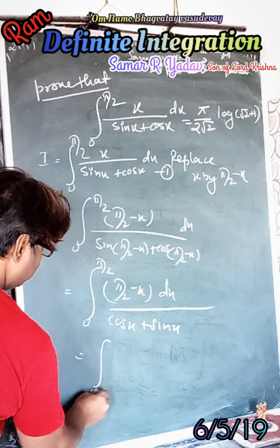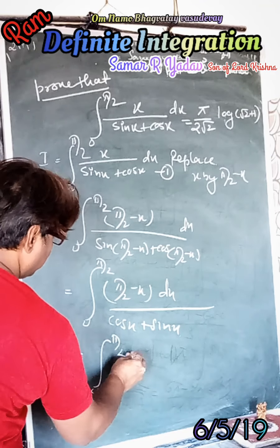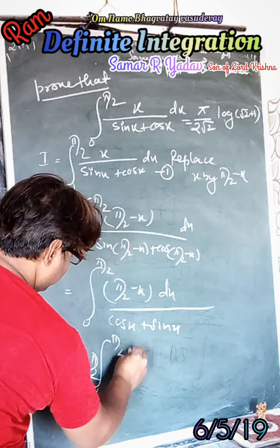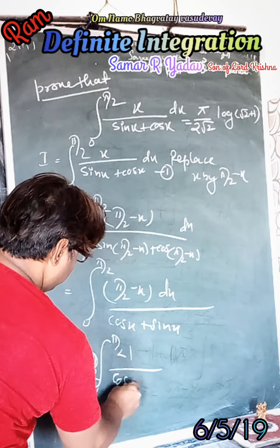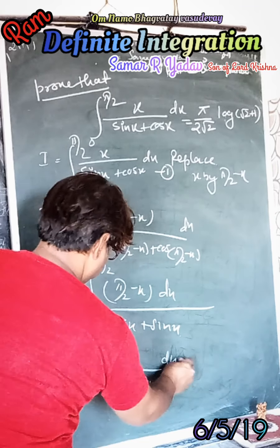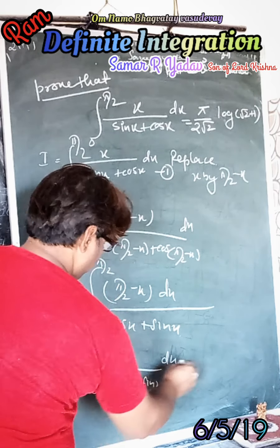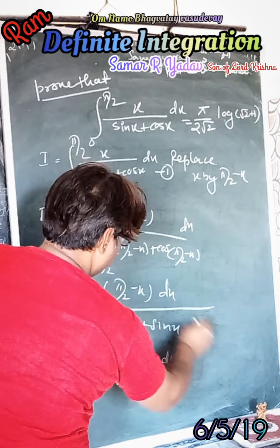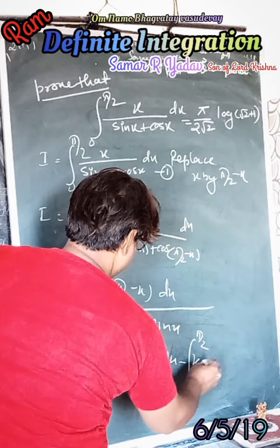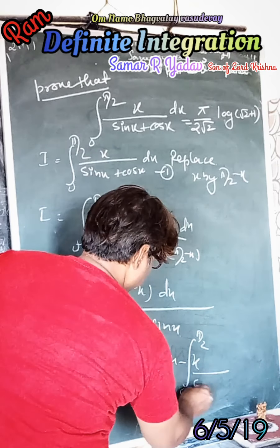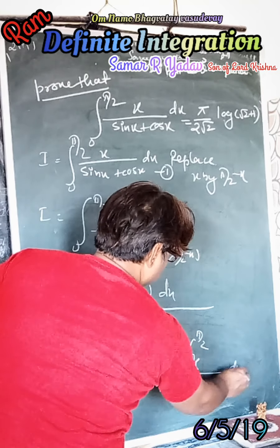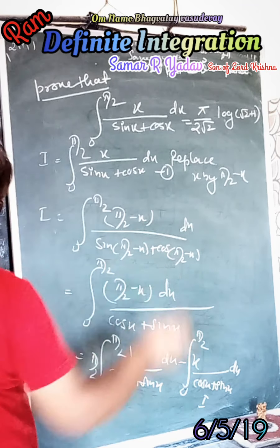We can write this as: I equals the integral from 0 to π/2 of (π/2)/(cosx + sinx) dx minus the integral from 0 to π/2 of x/(cosx + sinx) dx. That last integral is again I. Suppose this is equation number 2.